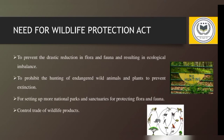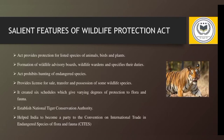The need for the Wildlife Protection Act includes: preventing drastic reduction in flora and fauna which may result in ecological imbalance and affect the food chain; prohibiting hunting of endangered species such as the Asiatic lion, Bengal tiger, and blackbuck to prevent extinction; setting up national parks, sanctuaries, and community reserves for wildlife protection; and controlling trade of wildlife products such as elephant tusks, sandalwood, and tiger skin.